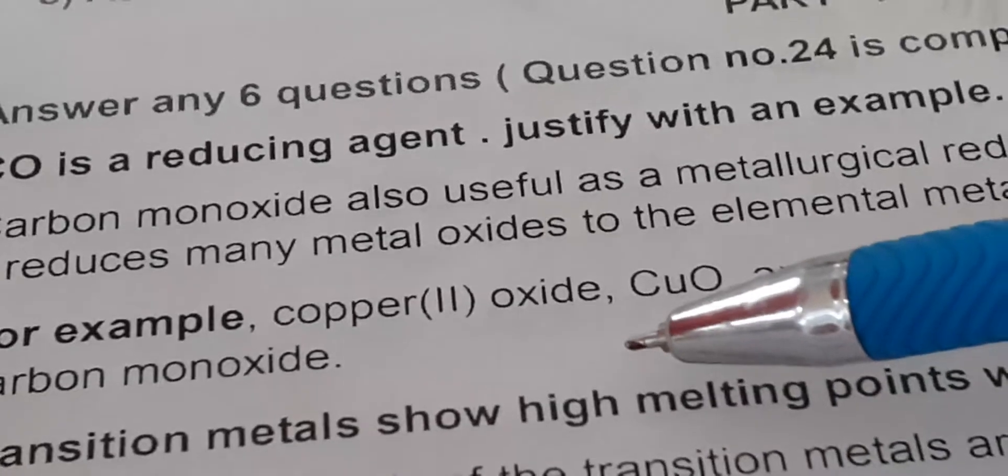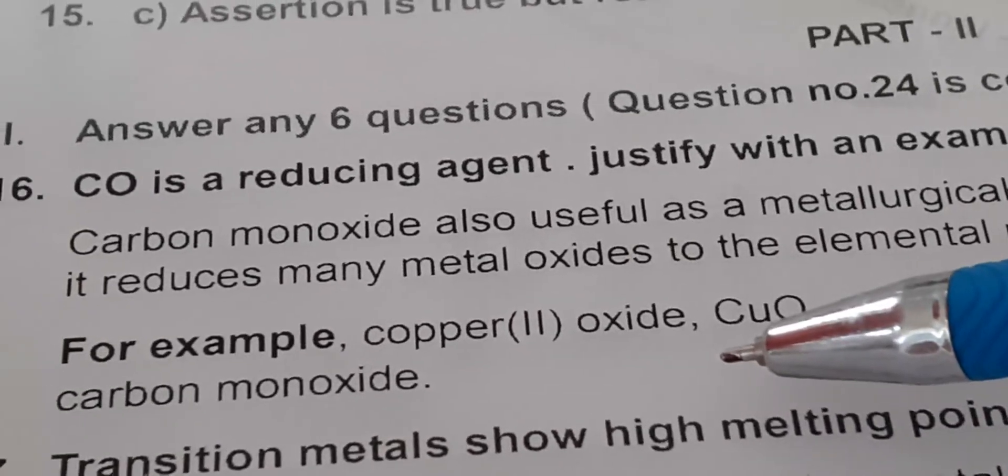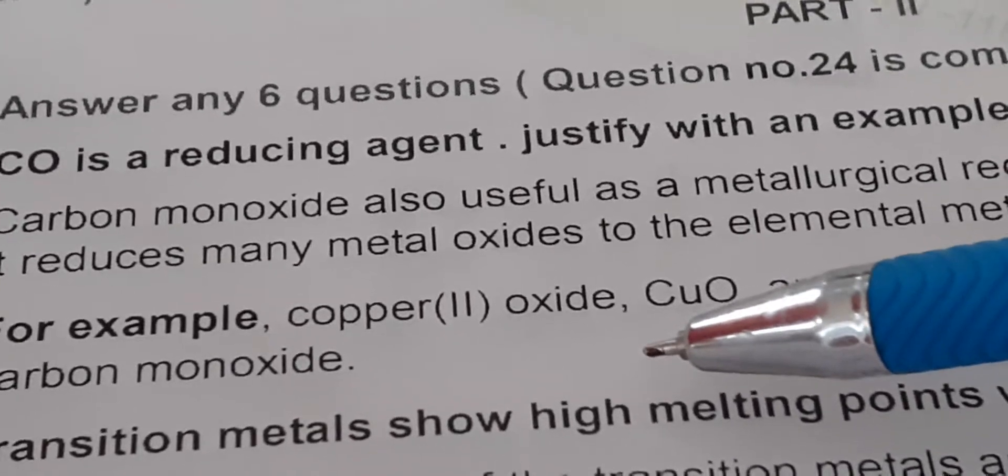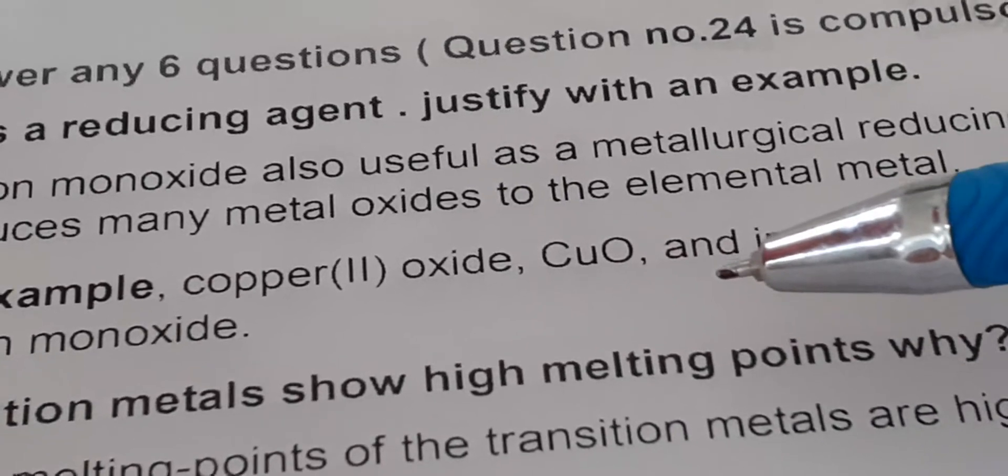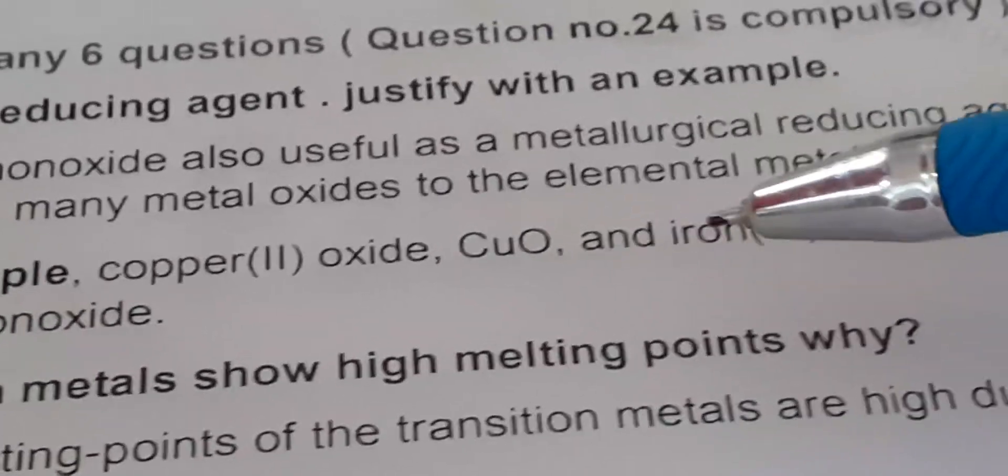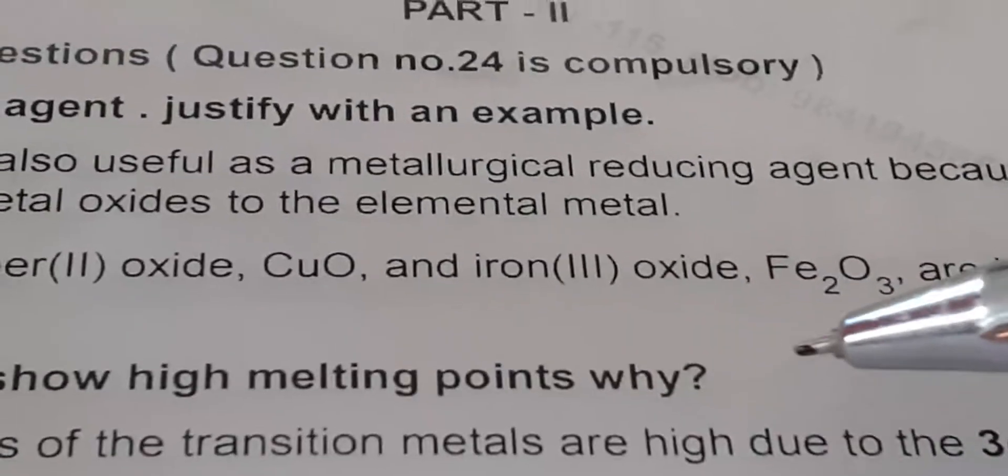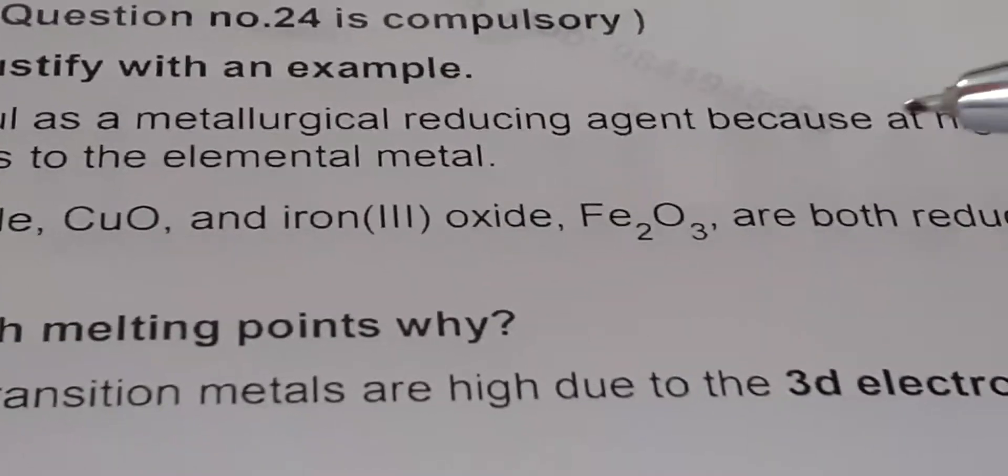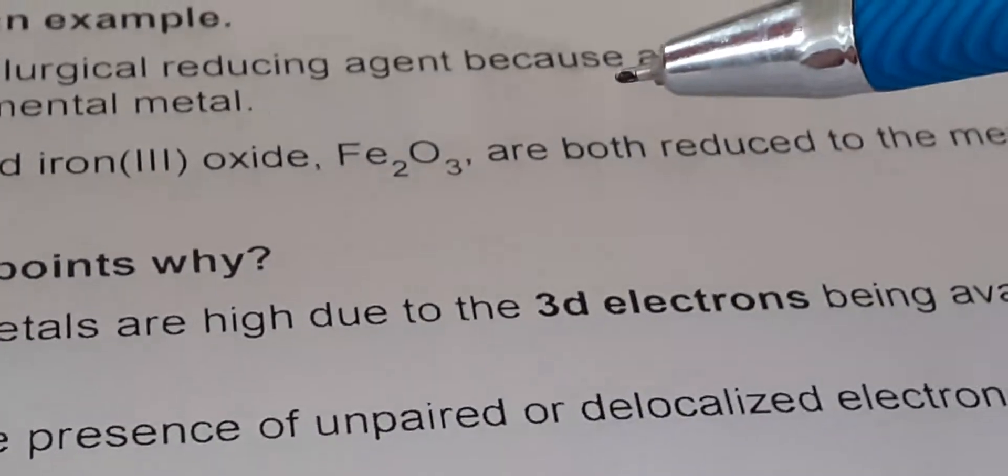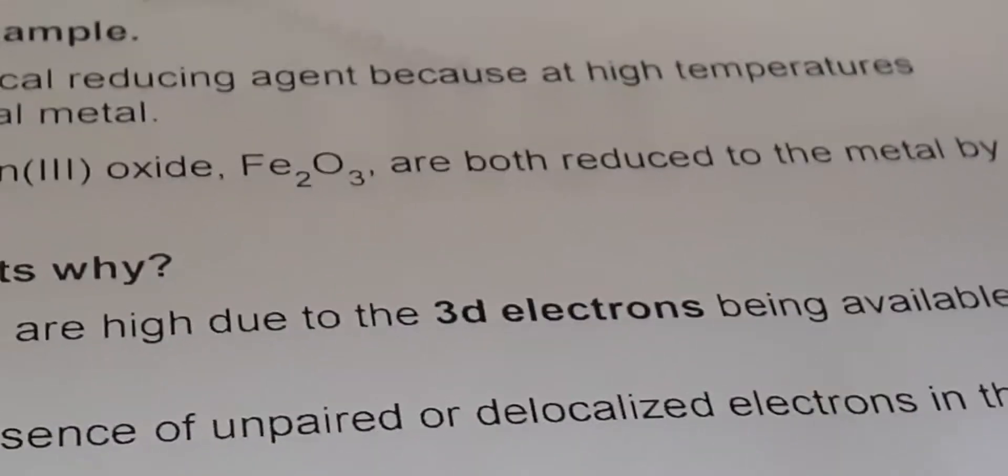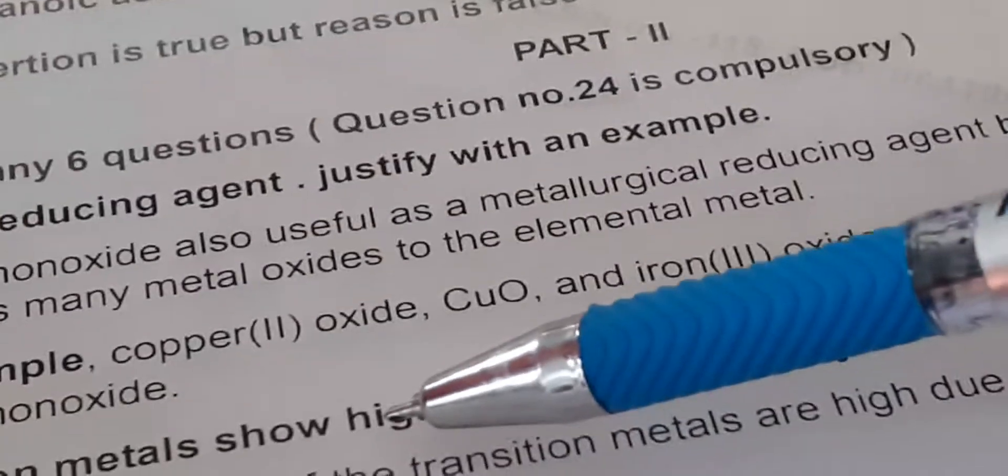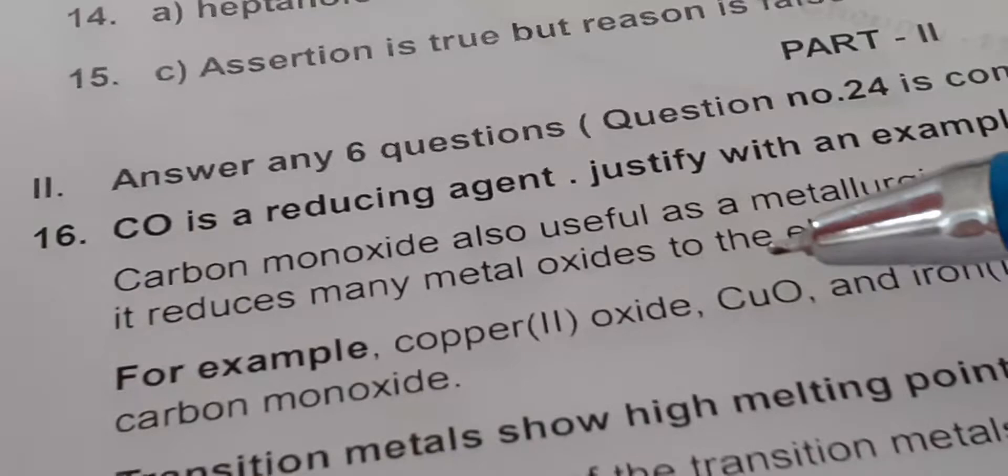For example, this Carbon Monoxide is useful in reducing Copper(II) Oxide to Cuprous Oxide and Iron(III) Oxide to Iron Oxide. See, these two are reduced to their Metal by this Carbon Monoxide.